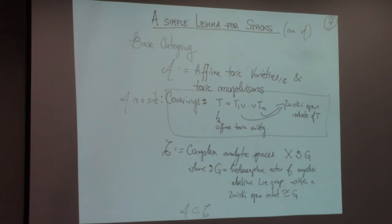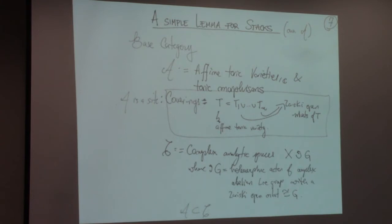I will go through the formal part quickly. The stacks live over a site: the site of affine toric varieties over ℂ with toric morphisms — we call it A. Affine toric varieties with toric morphisms is the basic site where the stacks live. For the Grothendieck topology, covers are toric open subsets of TV.